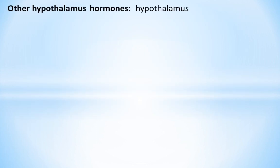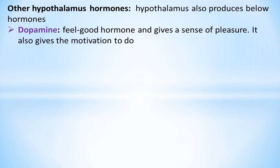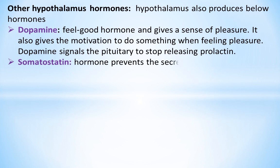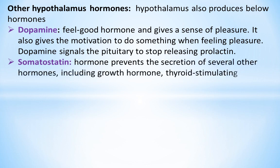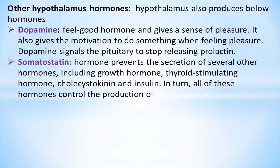Other hypothalamus hormones: The hypothalamus also produces dopamine, the feel-good hormone that gives a sense of pleasure and motivation. Dopamine signals the pituitary to stop releasing prolactin. Somatostatin is a hormone that prevents the secretion of several other hormones, including growth hormone, thyroid-stimulating hormone, cholecystokinin, and insulin. In turn, all of these hormones control the production of somatostatin.